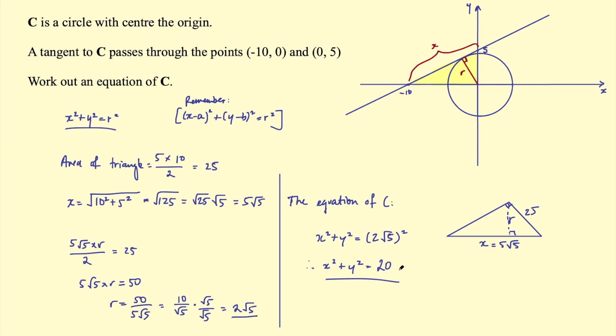So that is how you find the equation of a circle given a tangent between two points. Hope you found that helpful and I'll see you in the next one. Bye for now.